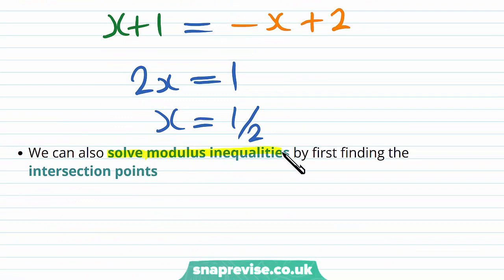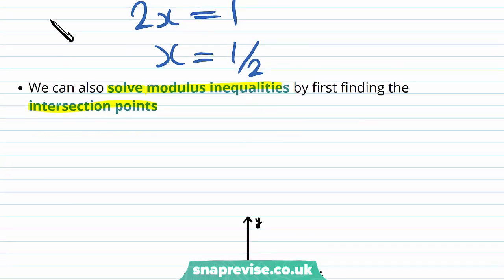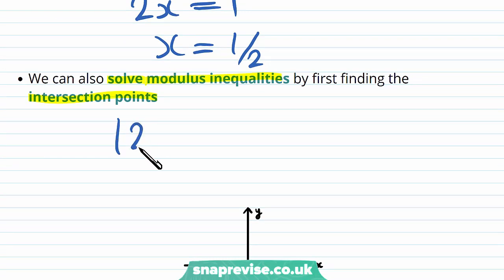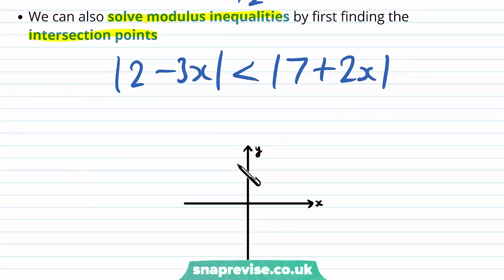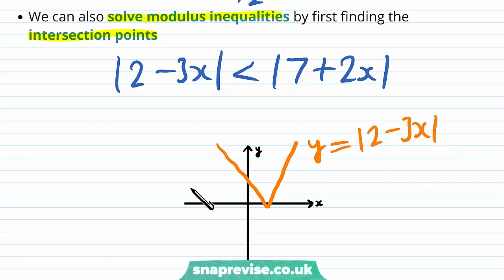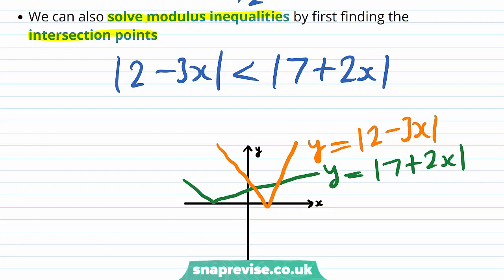We can also solve modulus inequalities by first finding the intersection points. Let's suppose we were asked to solve the inequality modulus of 2 minus 3x is less than the modulus of 7 plus 2x. We can graph these two functions on the same axes — y equals the modulus of 2 minus 3x and the modulus of 7 plus 2x — then locate the intersection points and label the branches. On the modulus of 7 plus 2x, we have a positive x term and therefore it's positive on the right and negative on the left. It's the opposite for the modulus of 2 minus 3x because we have a minus 3x, a negative x term, so it's positive on the left and negative on the right.